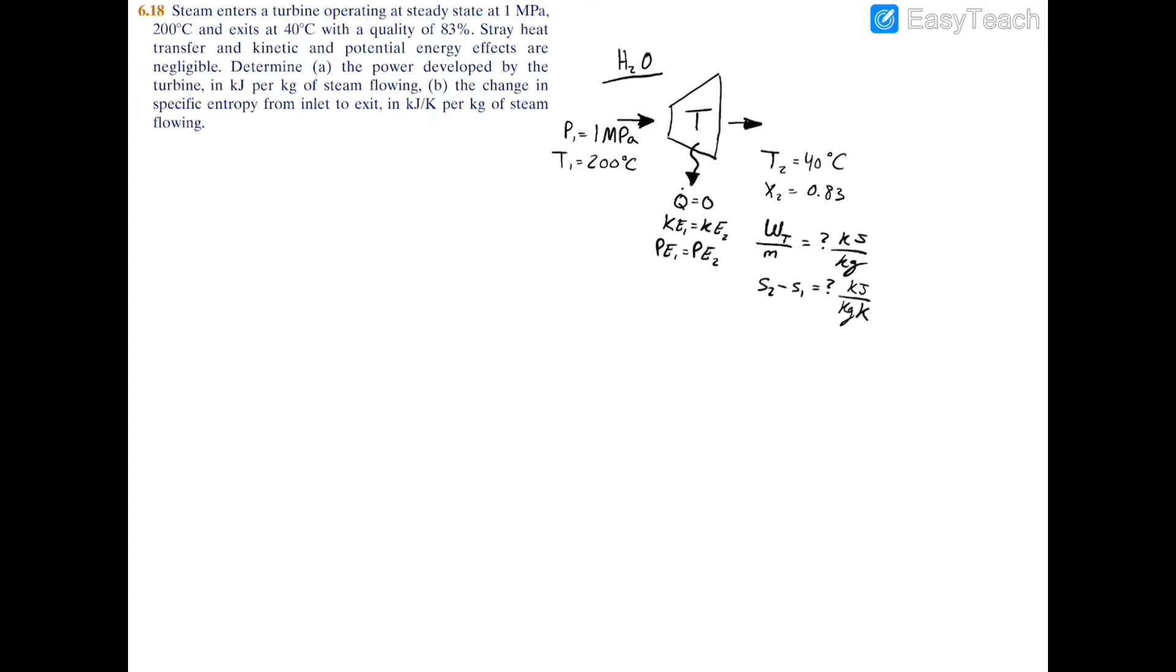If you recall, the work of a turbine wt equals the inlet enthalpy minus the exit enthalpy, so we need to fetch these values. At T1 equals 200 celsius and P1 equals 1 megapascal or 10 bar, let's figure out where we are on the phase diagram.